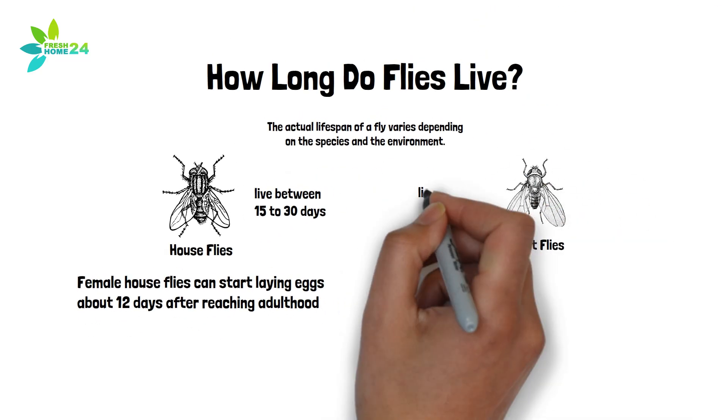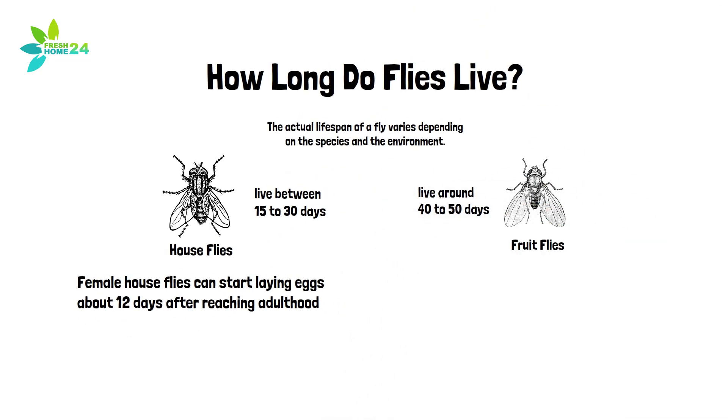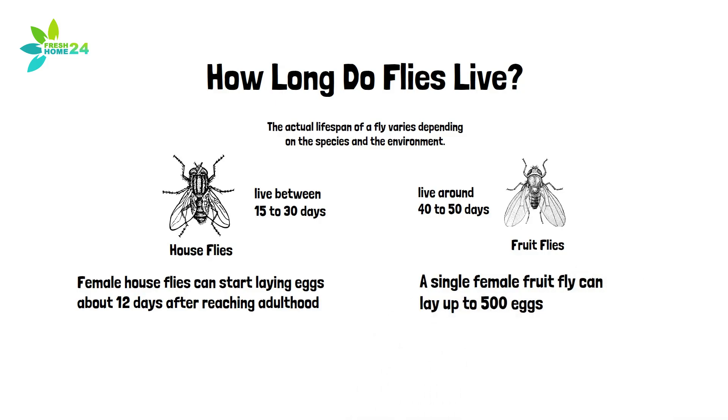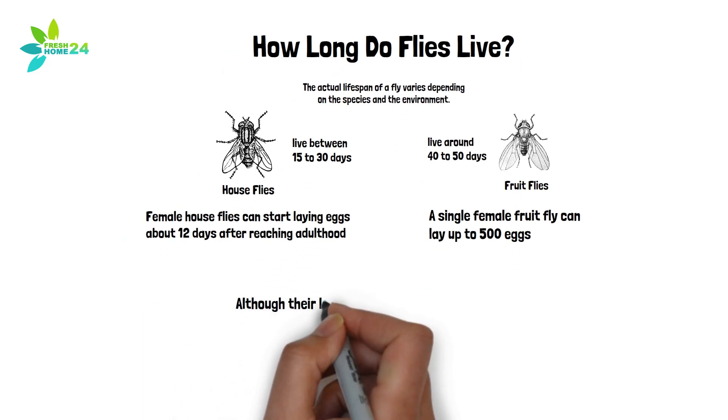Fruit flies. Fruit flies tend to live a little longer, usually around 40 to 50 days. Like house flies, fruit flies reproduce very quickly. A single female fruit fly can lay up to 500 eggs, making them particularly hard to control once an infestation begins.